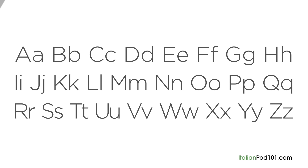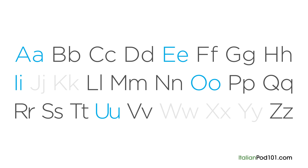Both English and Italian use the Latin alphabet. However, Italian only uses a select number of letters. The Italian alphabet has 21 letters — 5 of them are vowels and 16 are consonants. Compared to English's 26, you have 5 fewer letters to worry about.